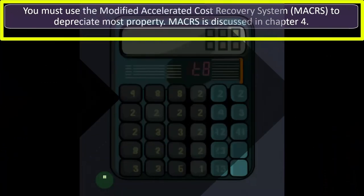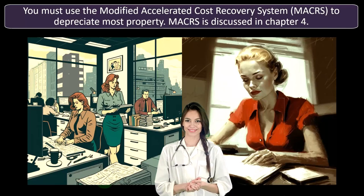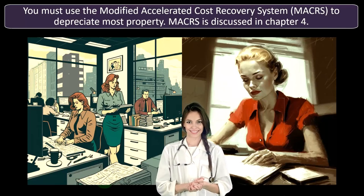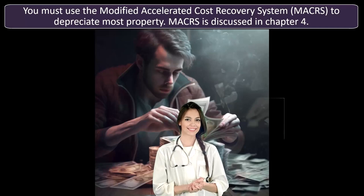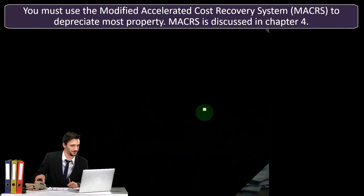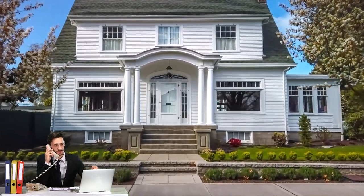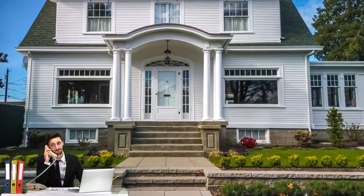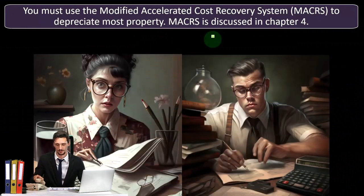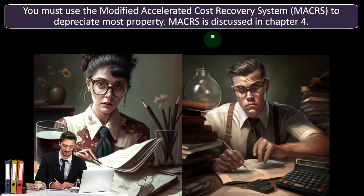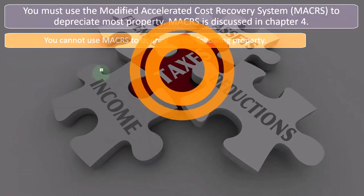You must use the Modified Accelerated Cost Recovery System, otherwise known as MACRS — M-A-C-R-S. When you think of MACRS, if you know accounting methods for depreciation, you've got straight-line and double declining balance and so on. MACRS is usually a form of double declining balance, although it has a half-year convention usually, depending on the type of property. We don't get to pick the method that best allocates the cost over the useful life — instead we've got to use what the tax code tells us to use, and usually that's MACRS.